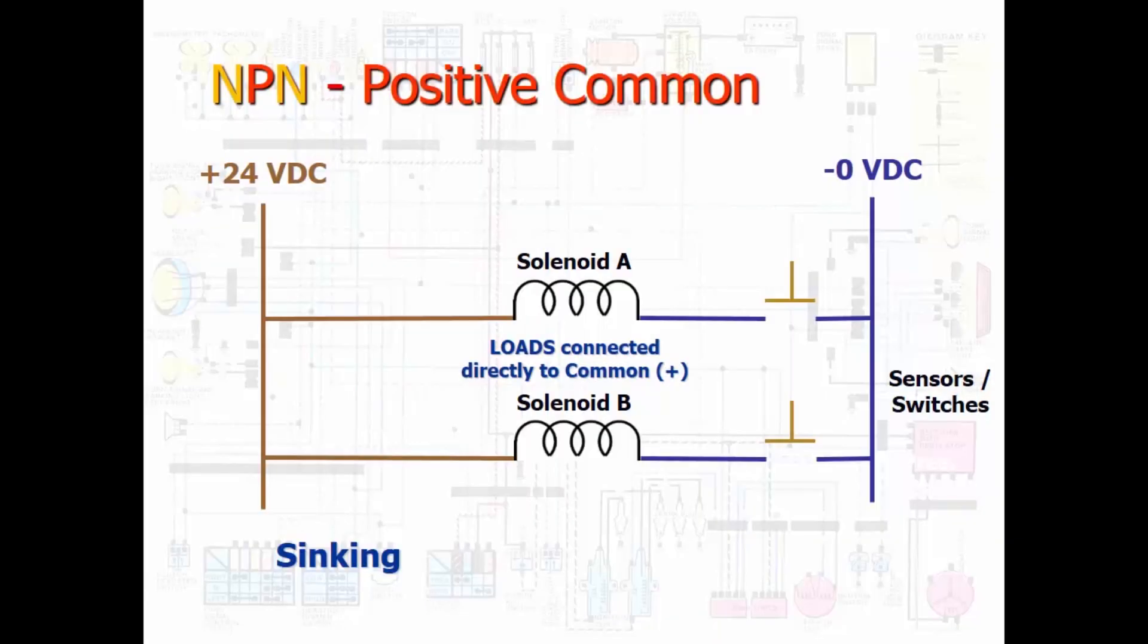However, if the circuit polarity should be NPN, the A and B solenoids are already connected to the 24 volt power. They just need controller signals to close the switches to sink to the negative common and thus turn A or B on.